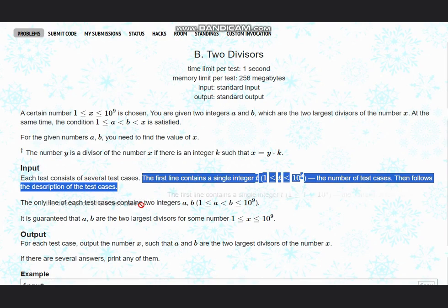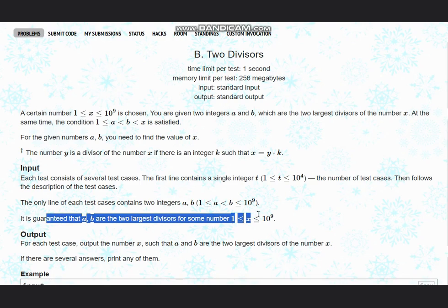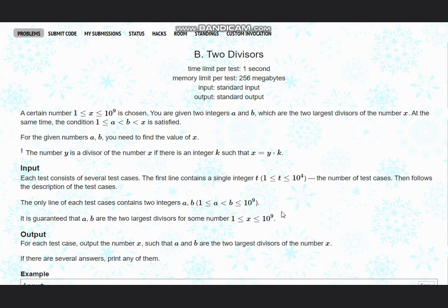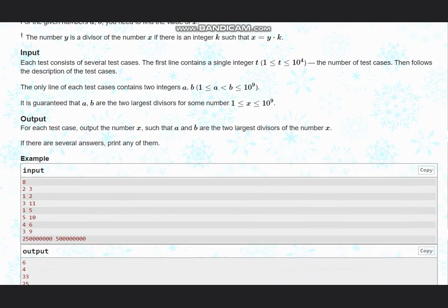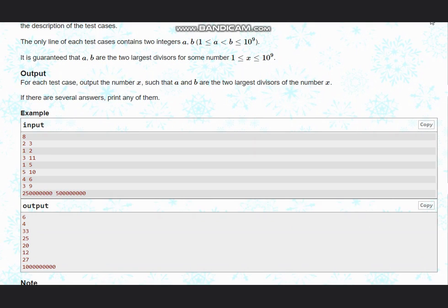Two integers a and b are given. It is guaranteed that a and b are the two largest divisors for some number x ranging from 1 to 10^9. We need to output this number x, and if there are several answers we can print any of them.